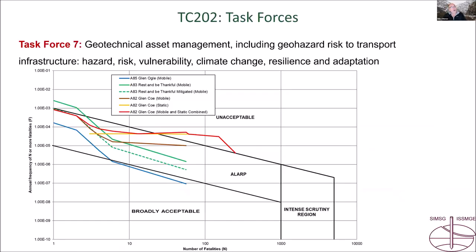Switching from asset risk to people risk, we can use quantitative risk assessment with FN diagrams — annual frequency of N or more fatalities against number of fatalities. We can put in different sites: here's one in Scotland that's broadly acceptable, sitting within as low as reasonably practicable. And here's another site very much in the unacceptable zone with unacceptable higher numbers of fatalities.